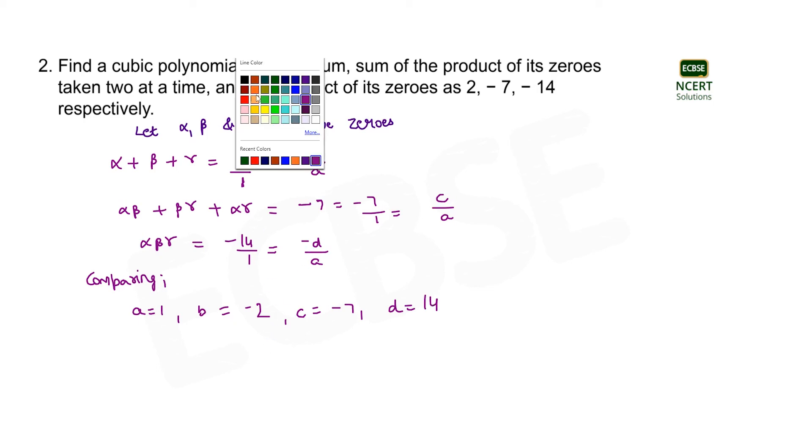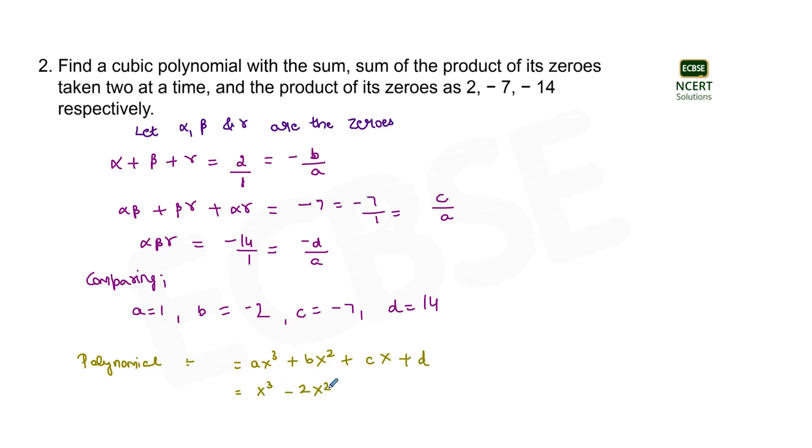So now if we come to the polynomial, the cubic polynomial can be written as a x cube plus b x square plus c x plus d. Now substituting the values of a, b, c and d in the polynomial we will get x cube minus 2 x square minus 7 x plus 14. So this is the answer of this question.